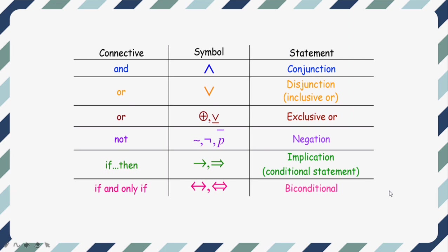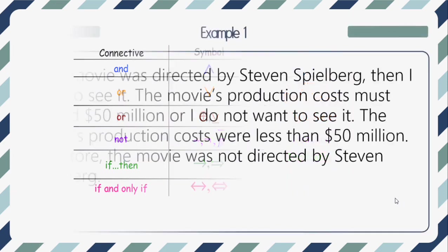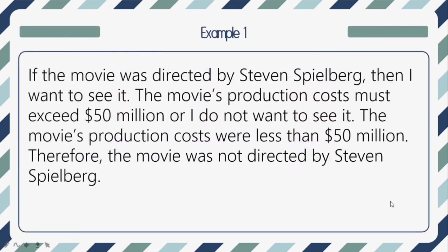Now let us go to our first example. If the movie was directed by Steven Spielberg, then I want to see it. The movie's production cost must exceed 50 million dollars, or I do not want to see it. The movie's production costs were less than 50 million dollars. Therefore, the movie was not directed by Steven Spielberg.